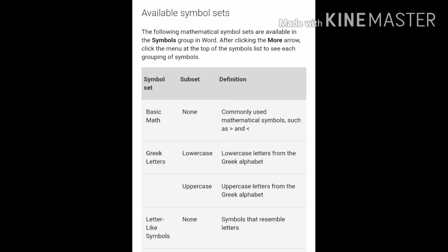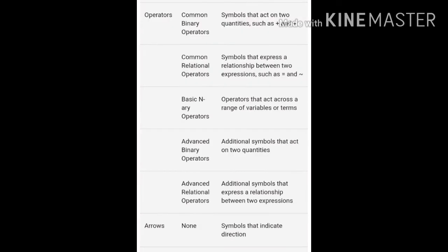Next one, Letter-like Symbols — subset is none. These are symbols that resemble letters; this option can be made by your letters, meaning one symbol. Next, Operators: Common Binary Operators — symbols that act on two quantities such as plus and divide. Common Relational Operators — symbols that express a relationship between two expressions such as equal to and similar.